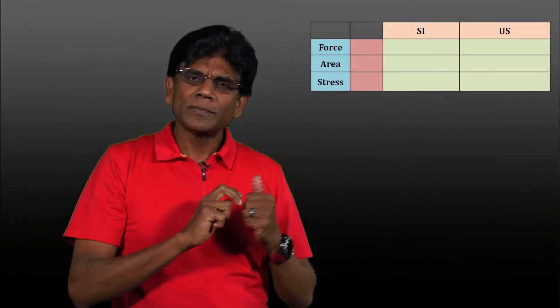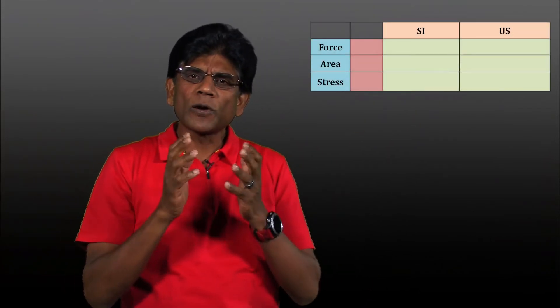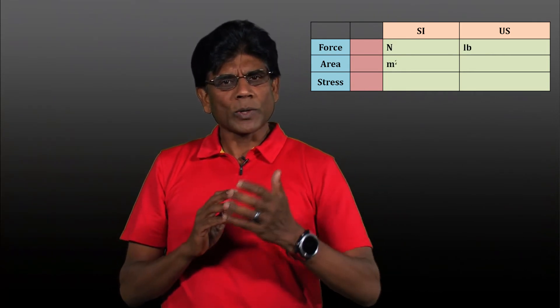Take a look at this table. The unit for force in the SI system is Newton, which is a derived unit. The unit for force in the US system is pounds, which is a primary unit. Area is expressed in meters squared in SI units and inch squared in US units.